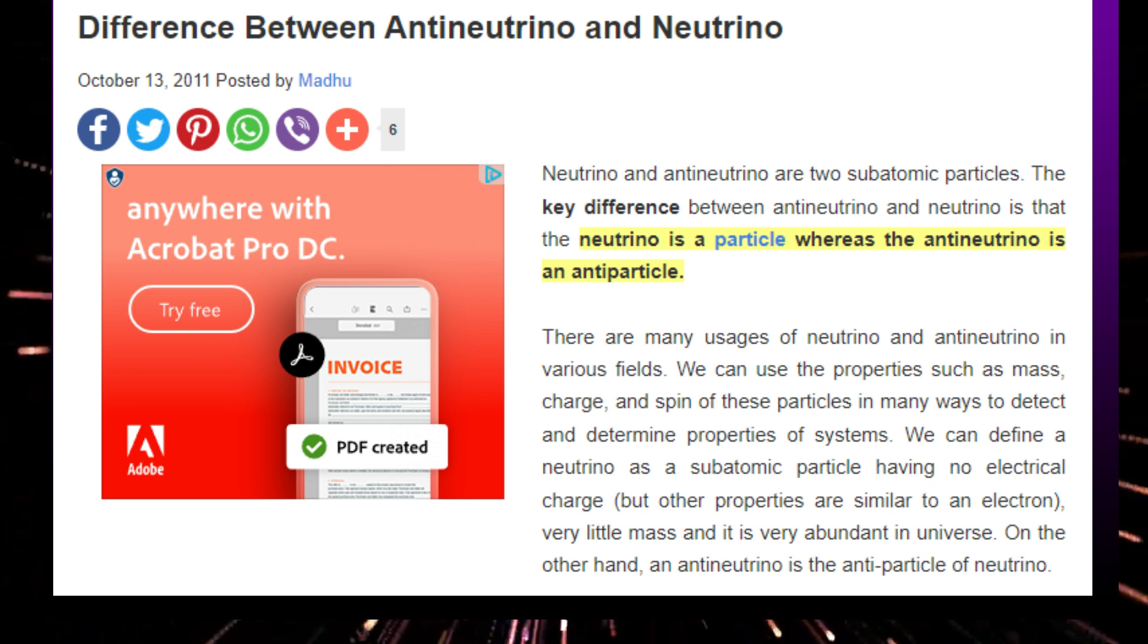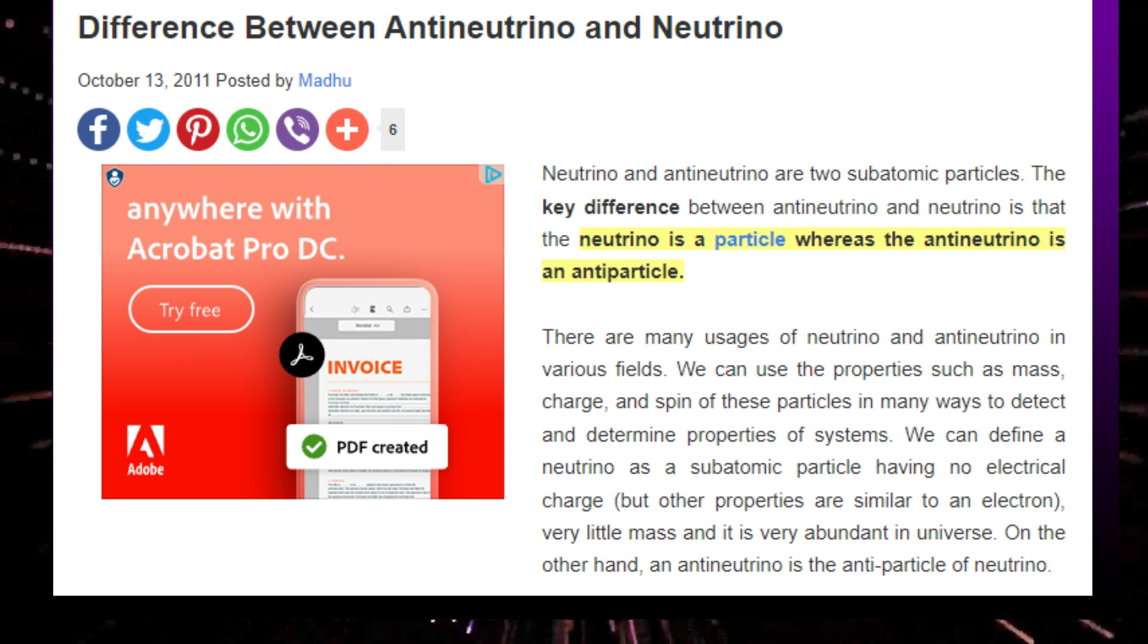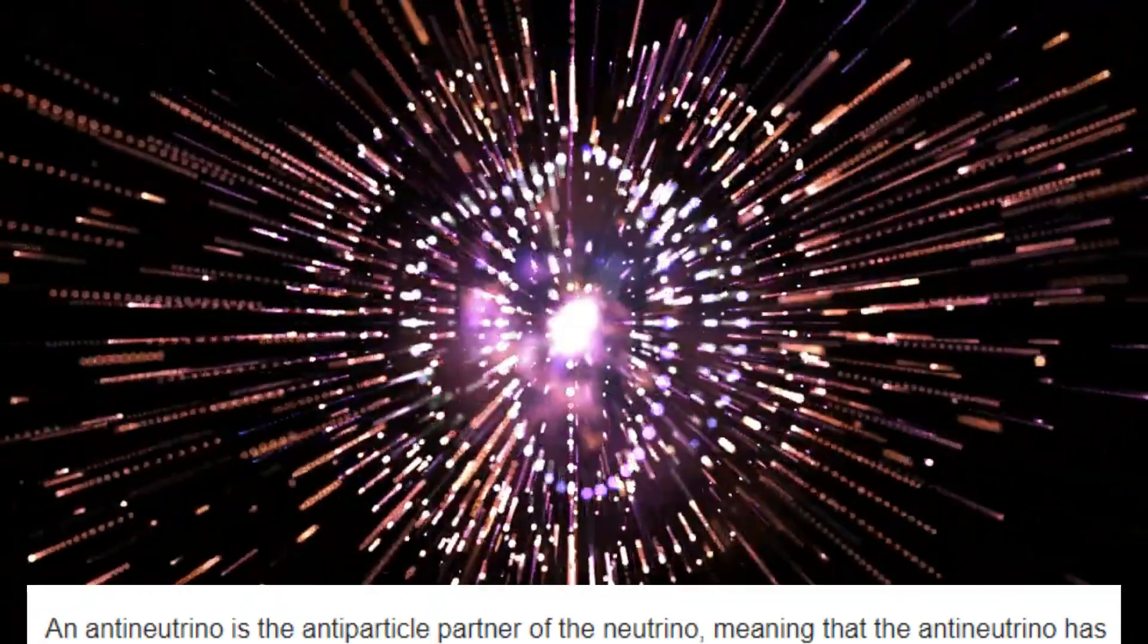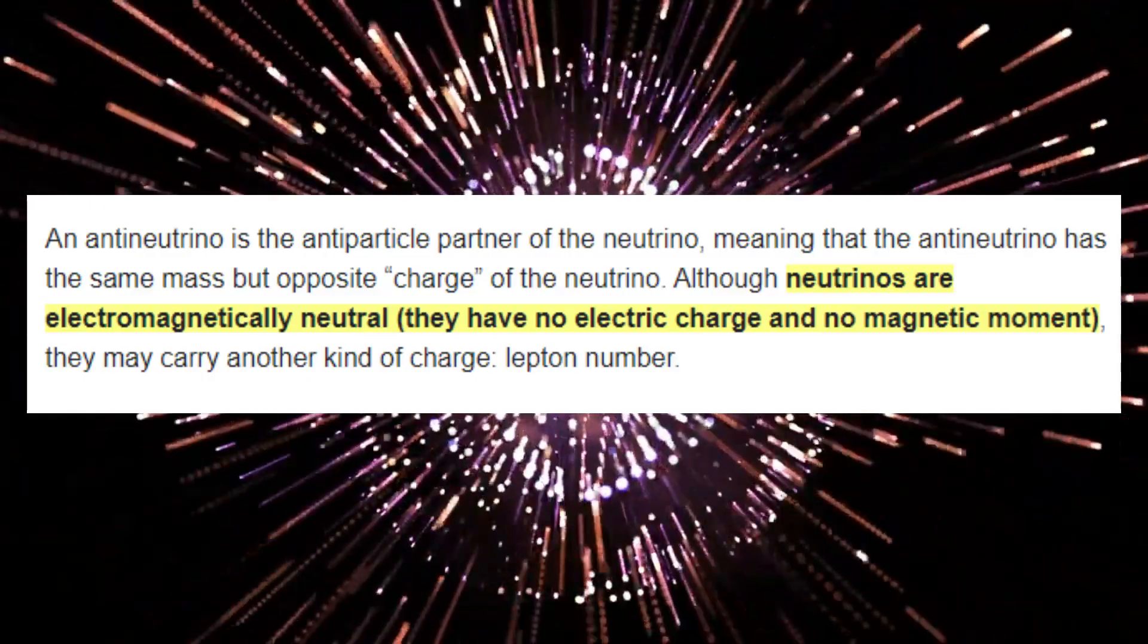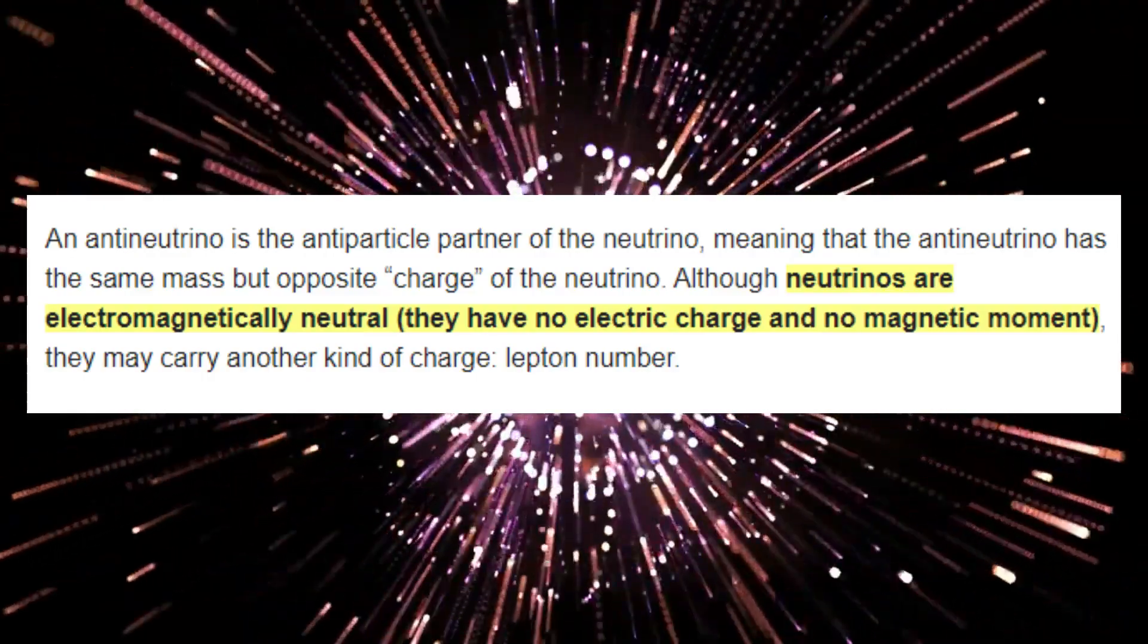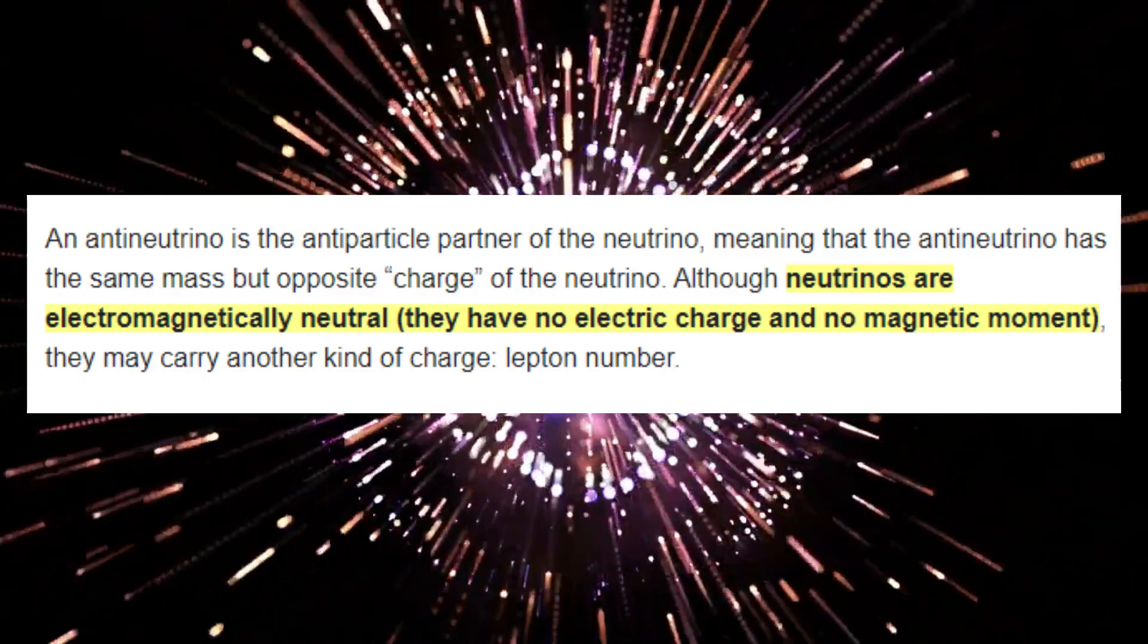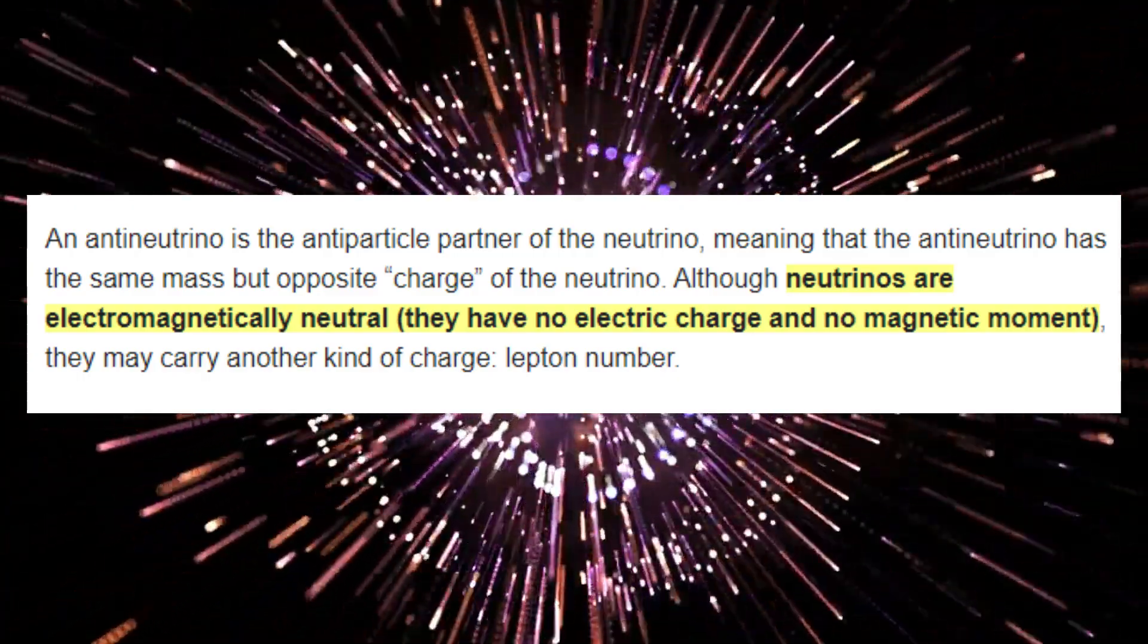You may recall that we stated that neutrinos do not possess a charge. This information may appear to be contradictory. However, both neutrinos and anti-neutrinos are electromagnetically chargeless. The opposite charge actually stands for a neutron's lepton number, which is a type of quantum number that is used to describe the properties of subatomic particles.